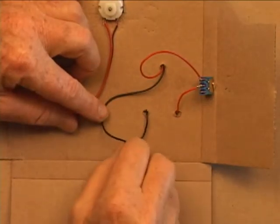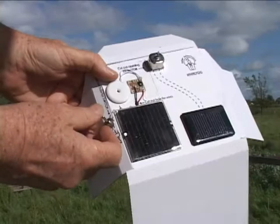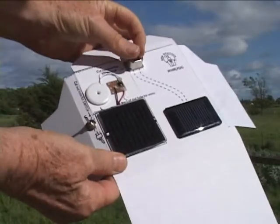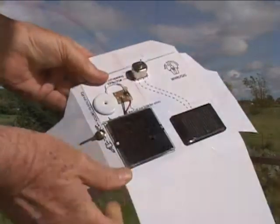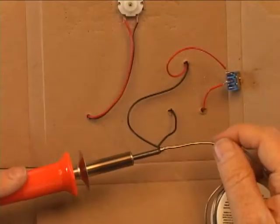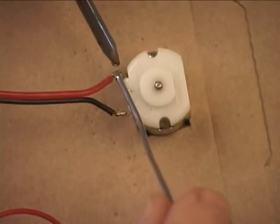Next, twist together the ends of the black wires from the solar cell and the music chip. Then take the whirligig into the sunlight and test both the music and the motor circuits. If they work, then solder the connections to the switch, the twisted ends of the black wires, and both connections to the motor.